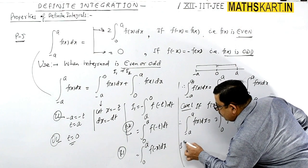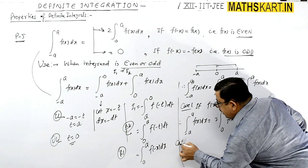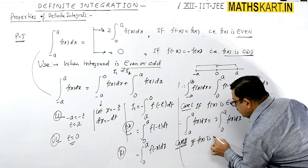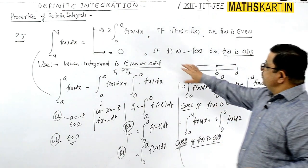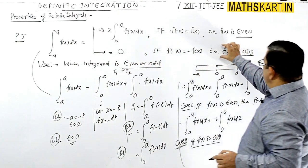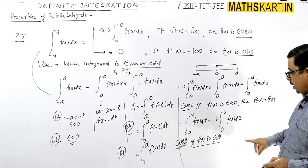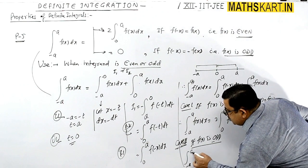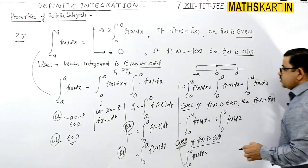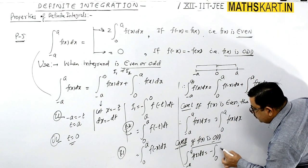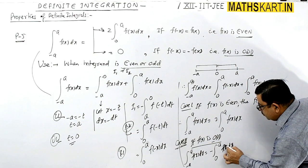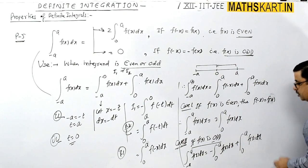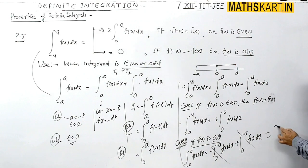Case 2: as per Property 5, second condition — if f(x) is odd, then f(minus x) equals minus f(x). In this case, the two integrals cancel each other, and the entire value becomes zero. So the integral from minus a to a of f(x) dx equals 0 when f(x) is an odd function.